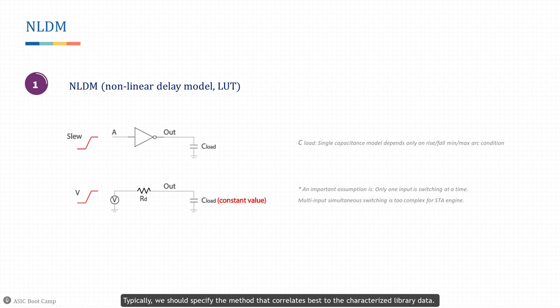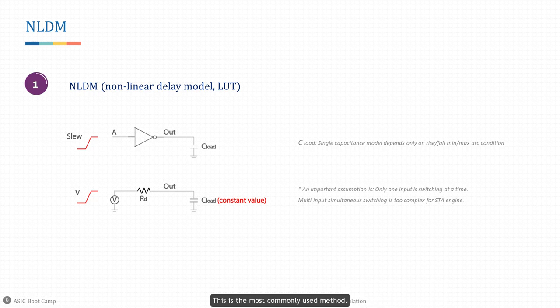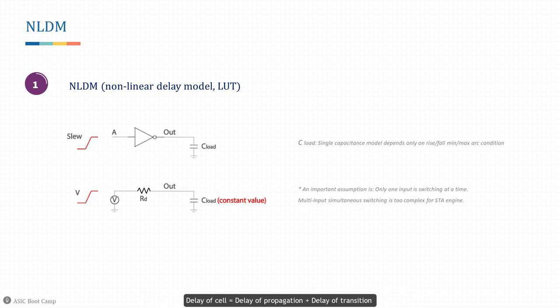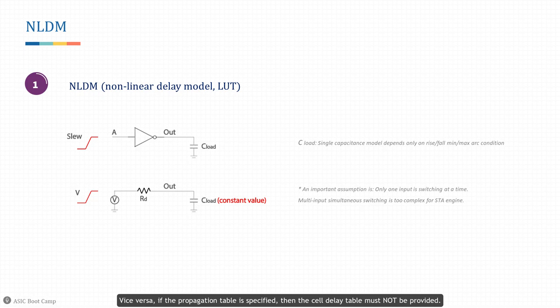We should specify the method that correlates best to the characterized library data. Method one: performing table lookup and interpolation in a cell delay table provided in the library — this is the most commonly used method. Method two: using the propagation and transition tables, following the equation: delay of cell equals delay of propagation plus delay of transition. For a given library, if cell delay tables for a timing arc are provided, then the propagation delay tables must not be provided, and vice versa. The tool can only choose one method for delay calculation.